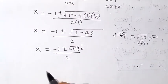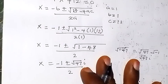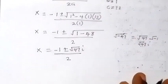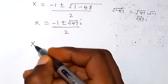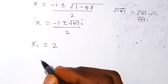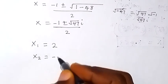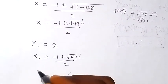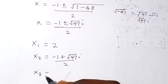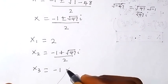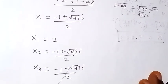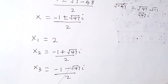Here we have two complex solutions. We have gotten one real solution: x equals 2. So we can conclude the three values of x: x₁ equals 2, x₂ equals minus 1 plus root 47 i over 2, and x₃ equals minus 1 minus root 47 i over 2. These are the values of x from the solution. Thank you for watching, don't forget to subscribe for more of our videos — see you in the next class, bye for now.